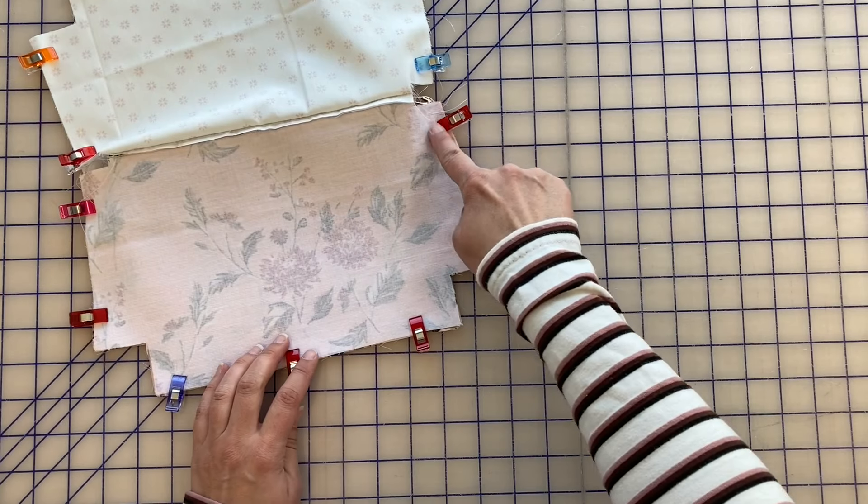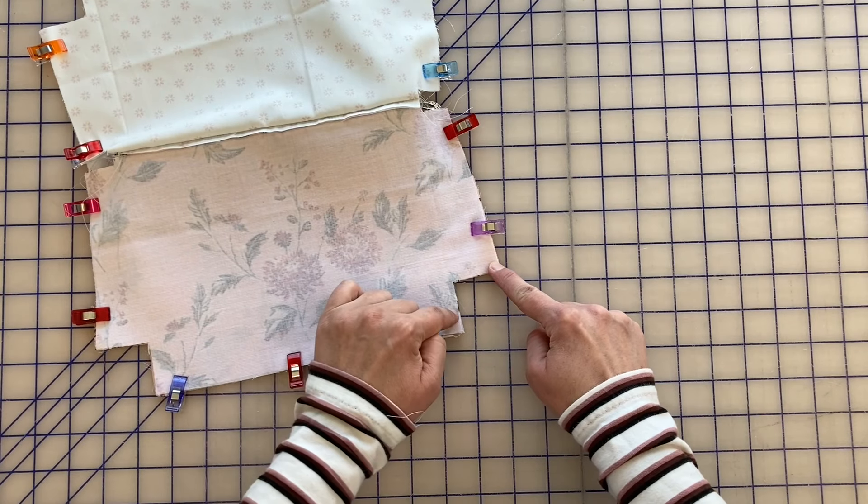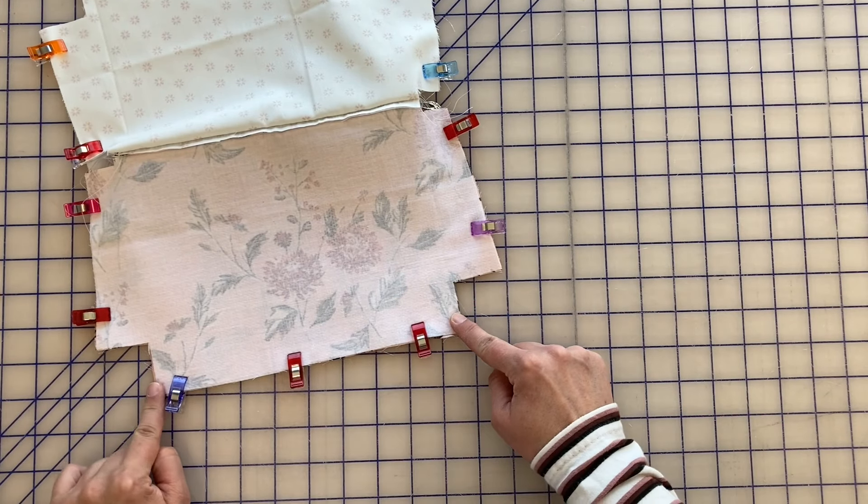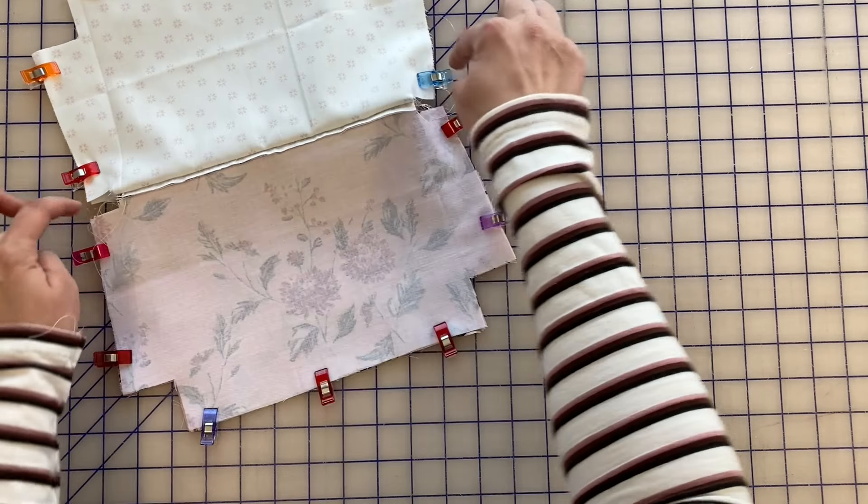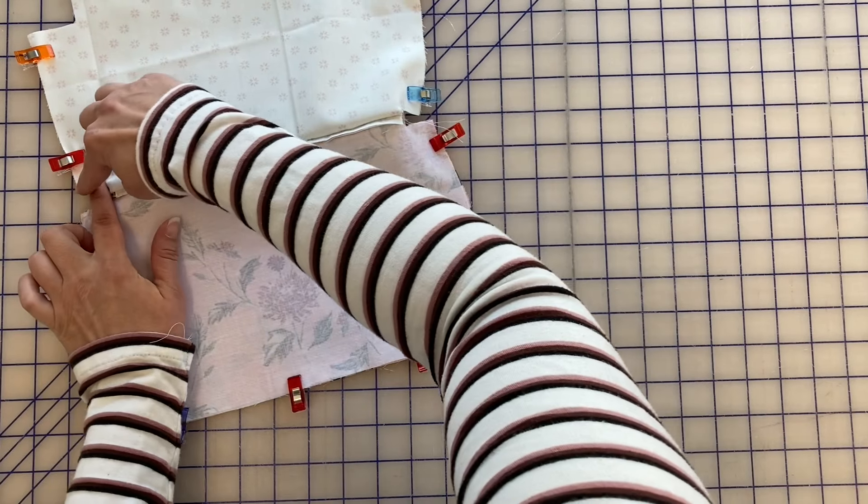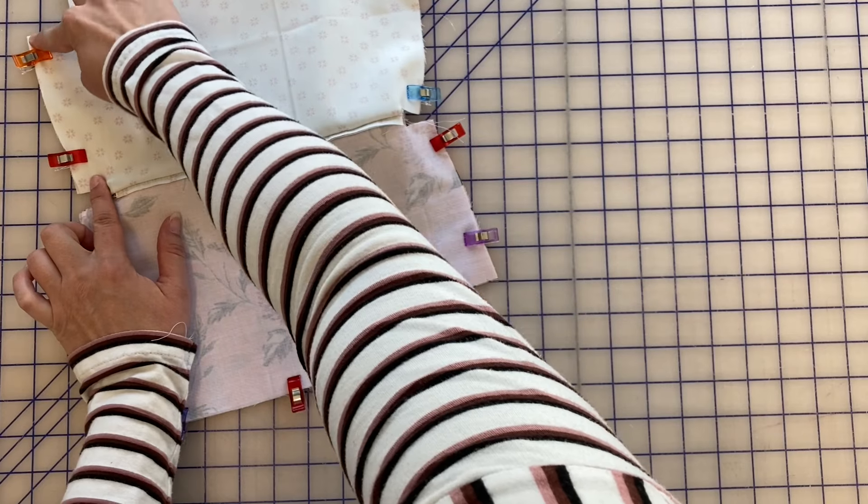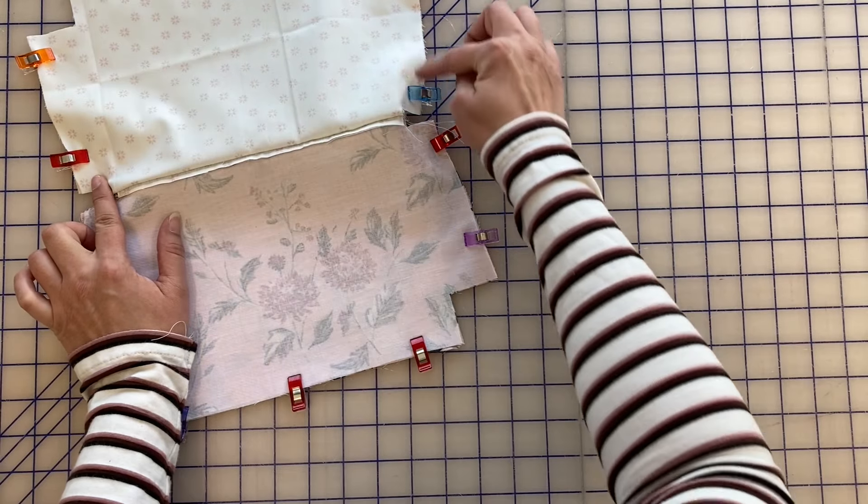So I am going to sew along here but not here. Then I'm going to go along the bottom but not in this square, along the side and not in here at all. I'm going to go down this side of the lining and then the other side of the lining.